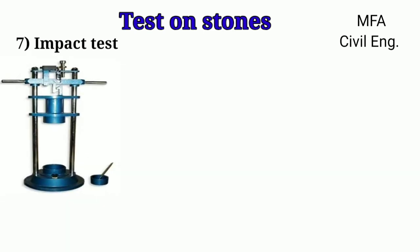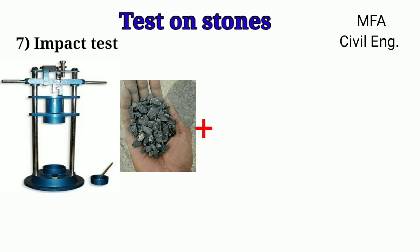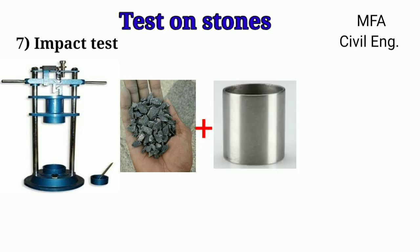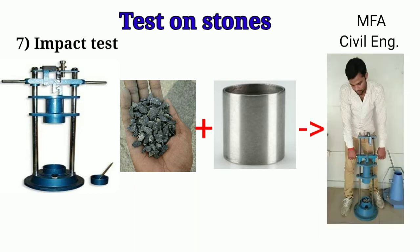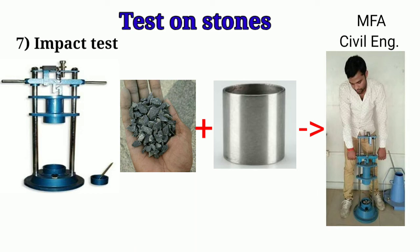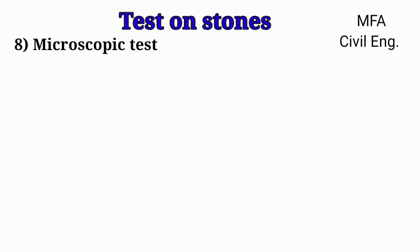Impact test: This test is useful to determine the toughness of a stone, carried out in a Page impact machine. A cylinder of diameter 25 mm and height 25 mm is taken from the stone sample and placed on a cast-iron anvil. A steel hammer of weight 20 Newton is allowed to fall axially in a vertical direction over the specimen. The height of the first blow is 1 cm, second blow 2 cm, third blow 3 cm, and so on. The blow at which the specimen breaks is noted as the nth blow, which represents the toughness index of the stone.